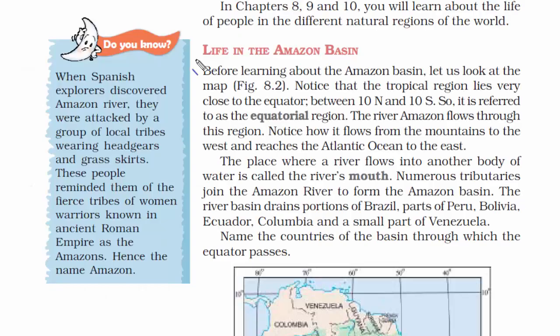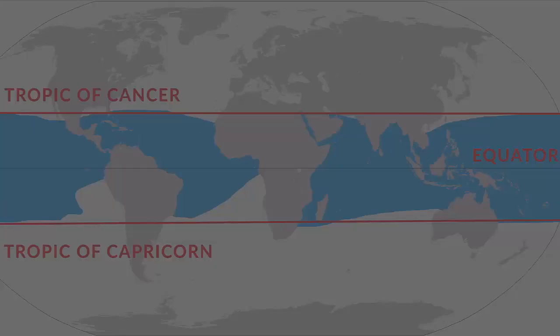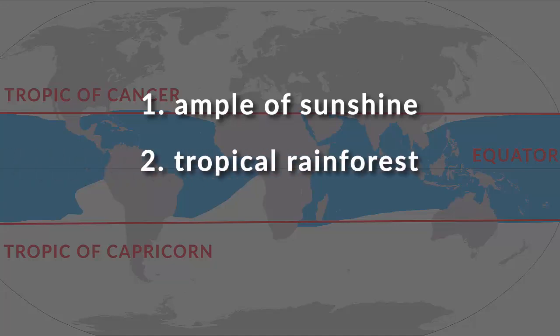First topic: life in the Amazon basin. First of all, we all know what and where the tropical region is — it is also referred to as the equatorial region. Remember these two points: number one, ample sunshine due to sun rays falling straight on the equator; number two, the term 'tropical rainforest' means heavy jungle, because this place receives heavy rainfall and has lush green vegetation cover.